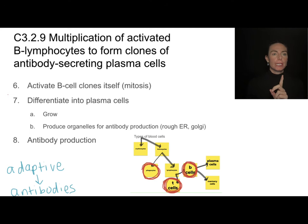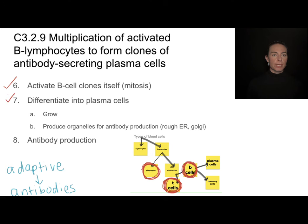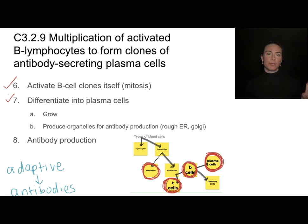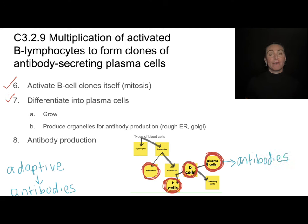Once that B cell has been identified, the T cell's job is done. That B cell is going to clone itself many times — clonal selection. Then it starts to differentiate: some of these B cells turn into plasma cells, expressing genes for antibody production. They grow and build a lot of rough endoplasmic reticulum and Golgi apparatus — because antibodies are proteins — and this is where the antibodies come from. All of this processing leads to the secretion of lots and lots of antibodies.